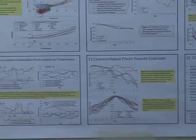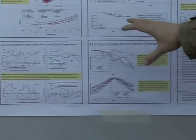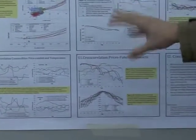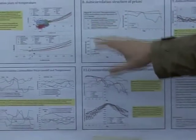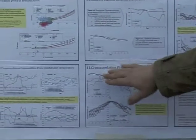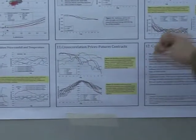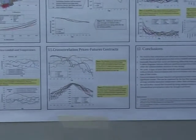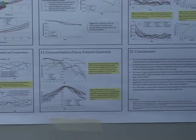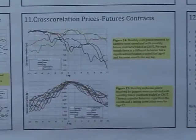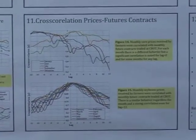The cross-correlation between commodity prices and rainfall or temperature is very weak. However, there is a strong cross-correlation between the prices and the futures contracts.